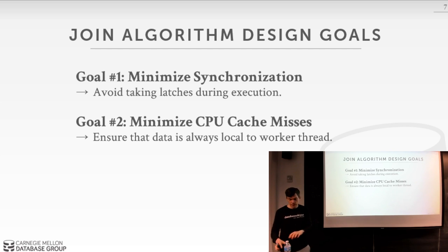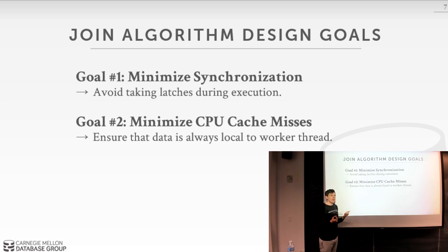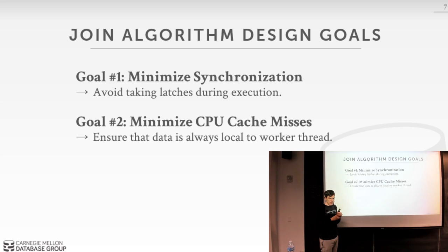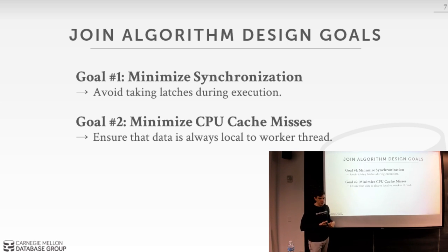The question of what's different about maximizing cache reuse versus maximizing access to local data: you could always access data local to your NUMA region but still jump around within it causing cache misses. The goal of partitioning is to have data in local memory, but even more fine-grained — does it fit in my CPU caches? They're related but cache behavior is finer grain than NUMA locality.